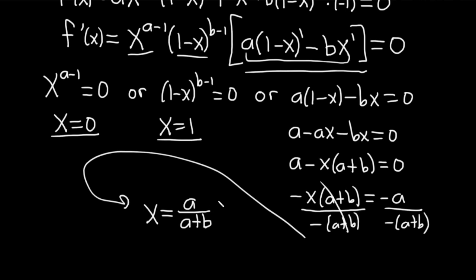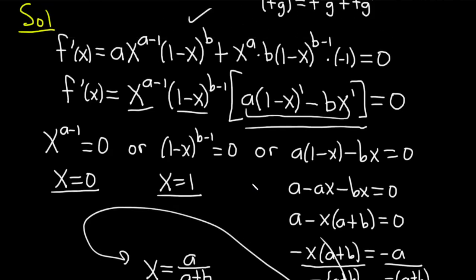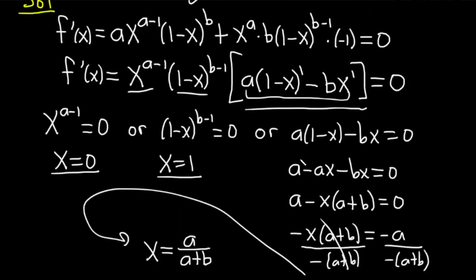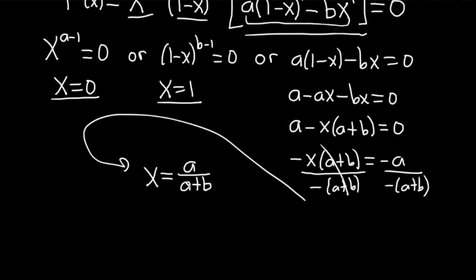We should verify this critical number is in our interval [0, 1]. Since a and b are positive, the numerator a is positive and the denominator a plus b is positive, so it's certainly positive. And a over (a plus b) is less than or equal to a over a, which equals 1, because a plus b is larger than a. So this number is between 0 and 1.